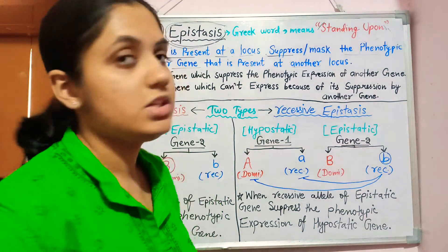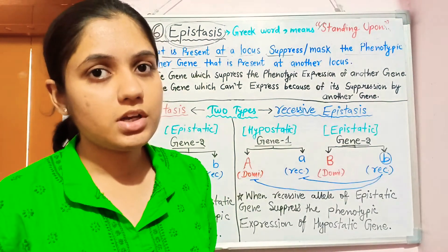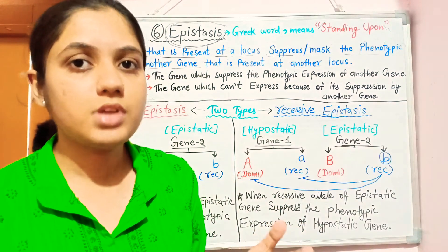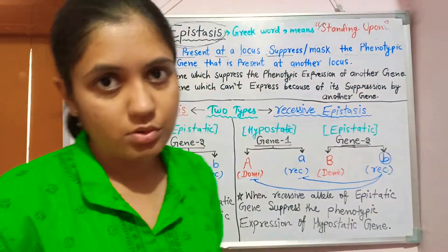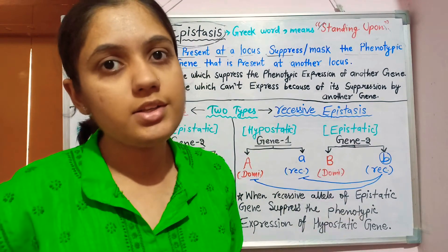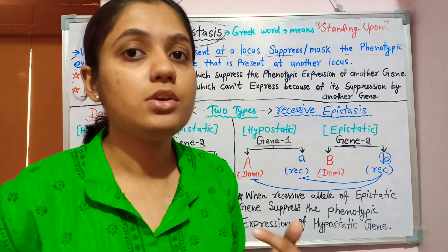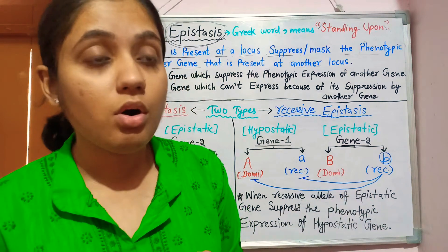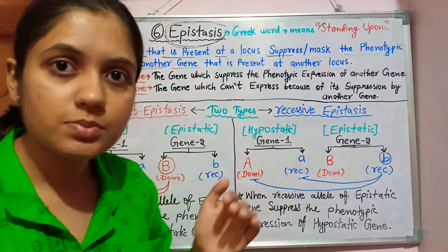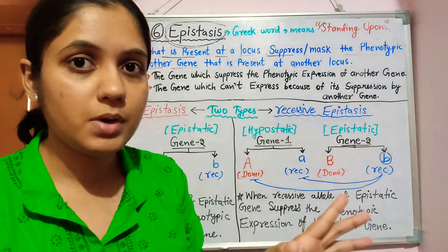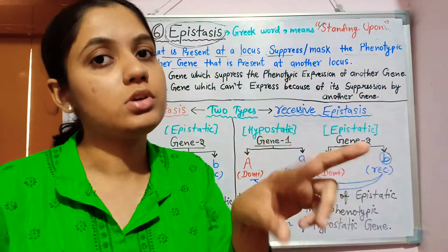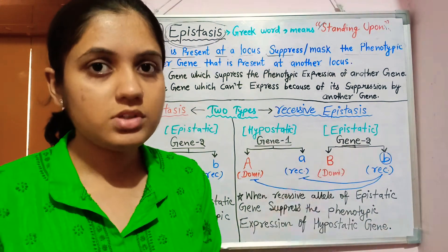Intergenic gene interaction is of six to seven types, and epistasis is the sixth type. Intergenic means it occurs between two different genes. These two genes can be present on the same chromosome at different loci, on homologous chromosomes at different loci, or on non-homologous chromosomes.